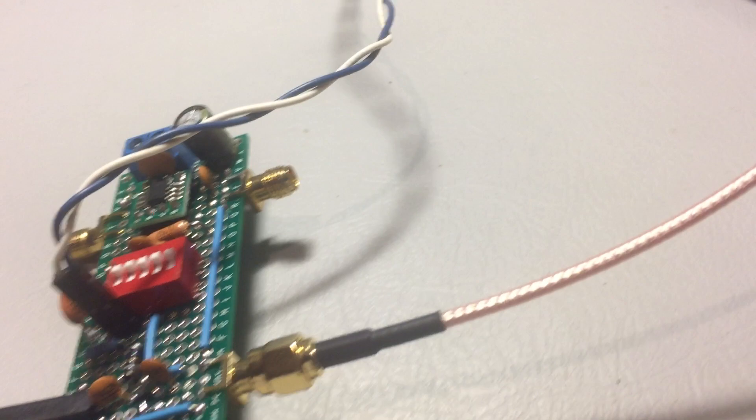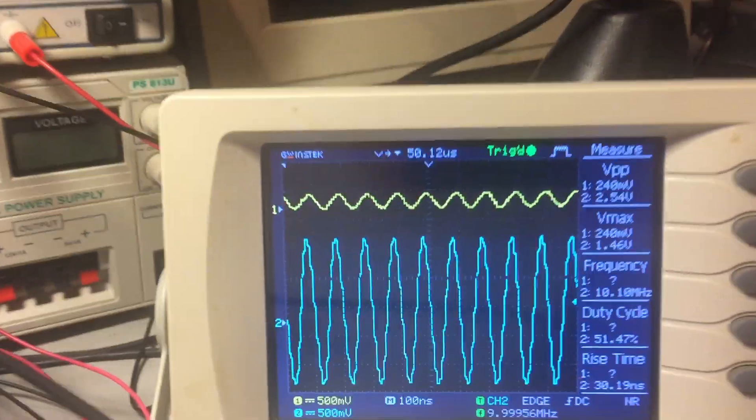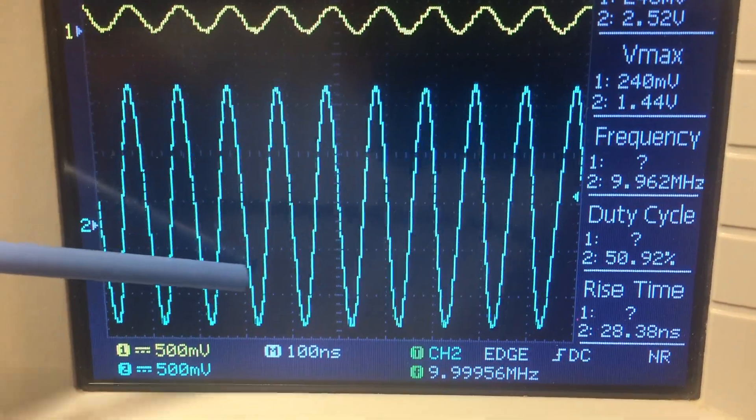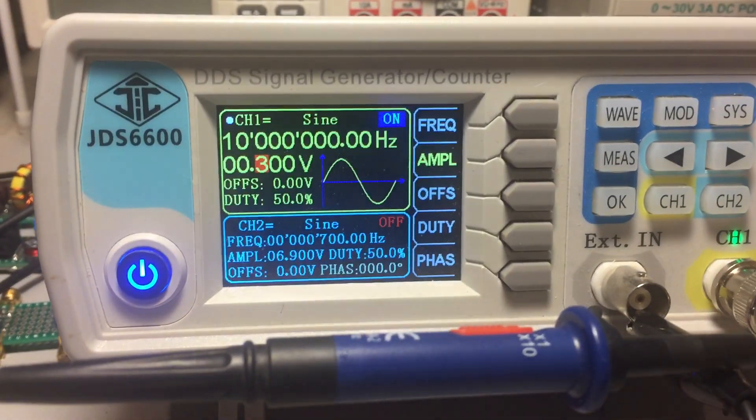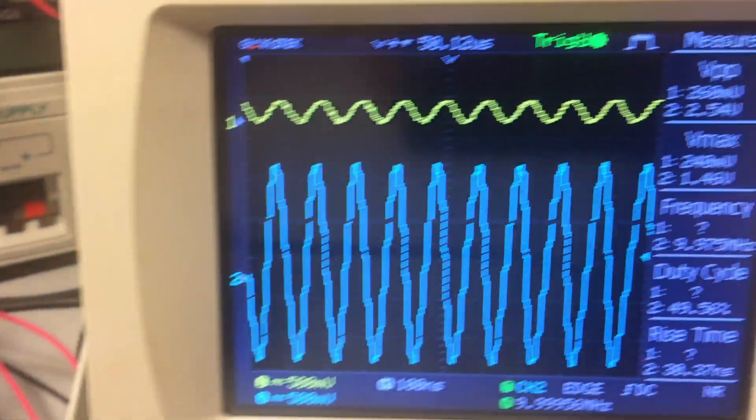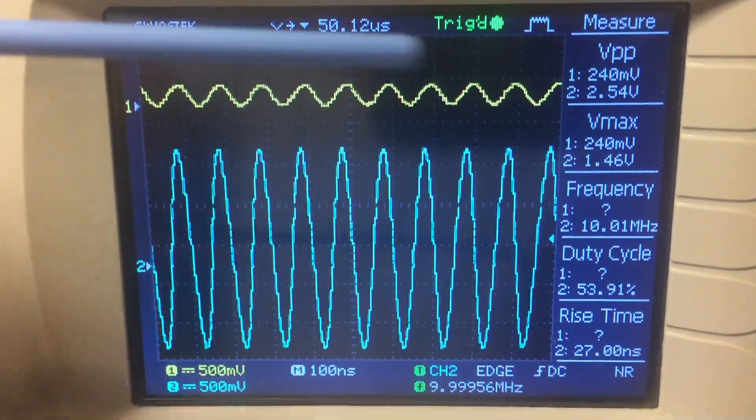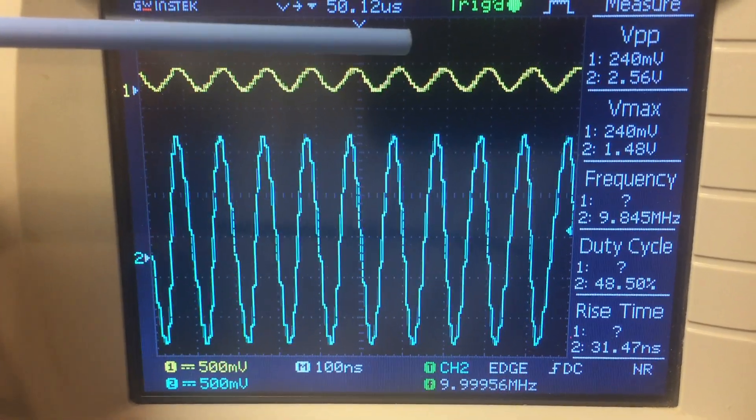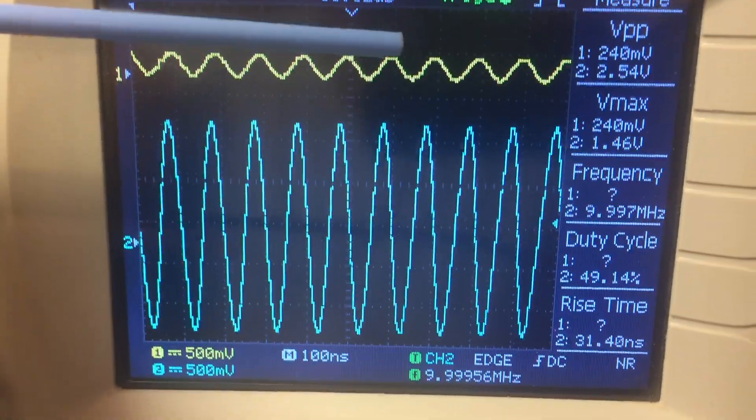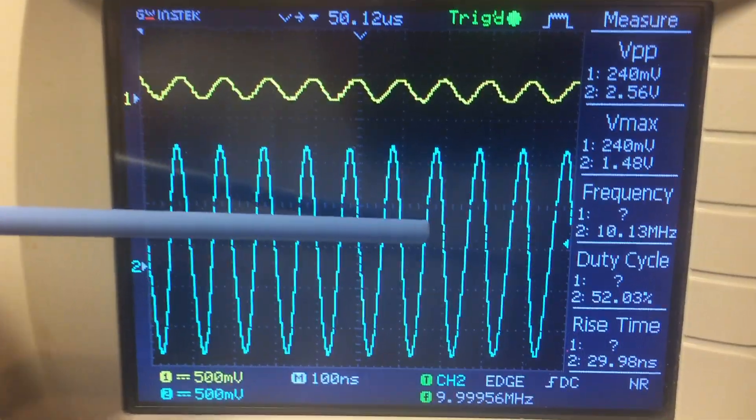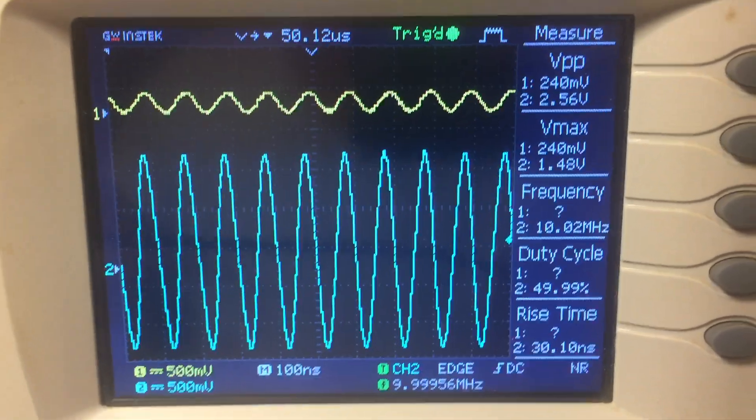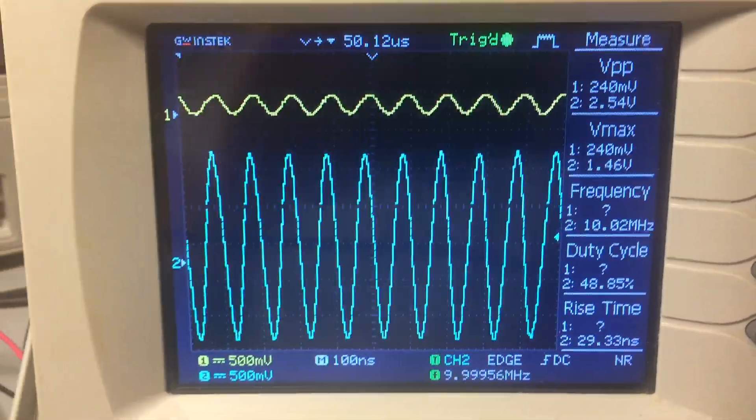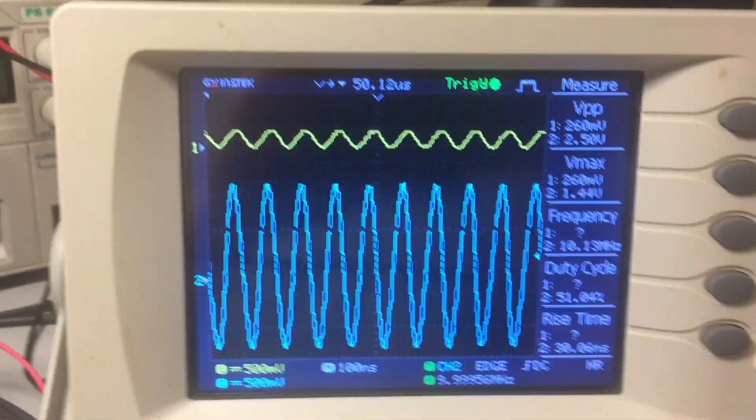We're going to actually take a look at the waveforms and see exactly how this works and do some gain measurements. Here we can see this is channel one, this is channel two. This is my input signal. We're using a 10 megahertz signal. You can see the input is fluctuating somewhere between 240 and 260 millivolts, so we'll call that 250. The output is around 2.5 volts. To calculate gain, it's just the output voltage divided by the input voltage, so we'll call that 10. We have a gain of about 10.